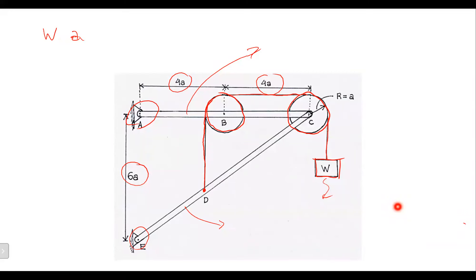For the external load, how should we replace the load which is happening because of the pulleys and the rope? We have to draw free body diagrams, of course.